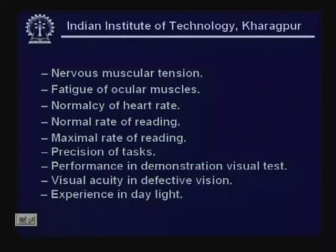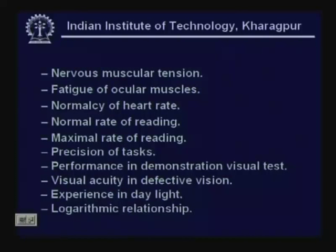Some people, due to age, use, or abuse, develop defects in vision. These defects, which are corrected with glasses, are called refractory errors, and one must look at visual acuity in defective vision. All this must be correlated with our experience in normal daylight, since artificial illumination systems aim to be as close to natural light as possible. The illumination requirement vis-à-vis visual parameters are logarithmically related.